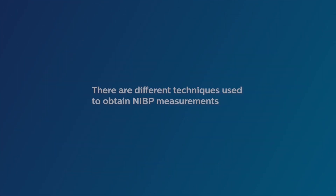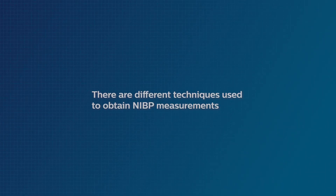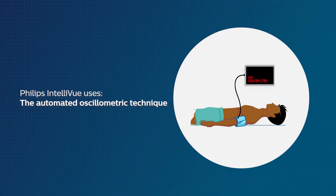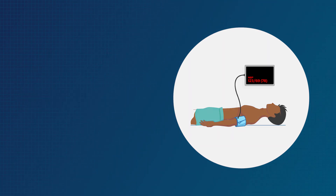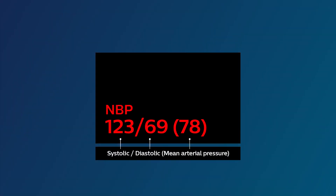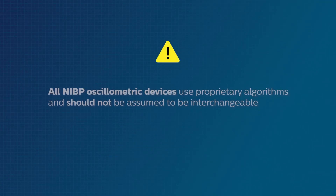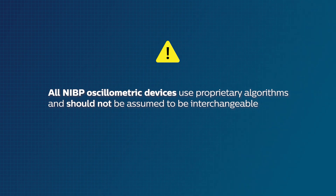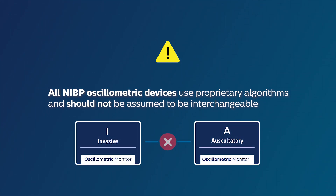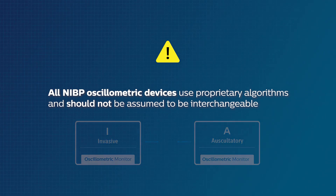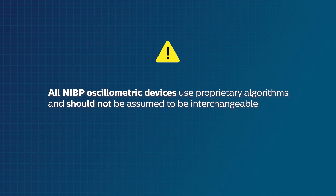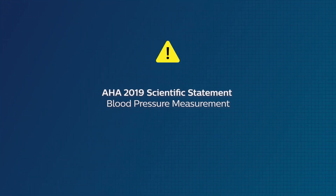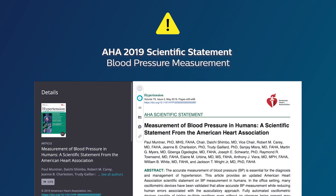Different techniques are used to obtain NIBP measurements. The Philips and Teleview patient monitors use the automated oscillometric technique to determine the systolic, diastolic, and mean arterial pressures. It's important to note that all NIBP oscillometric devices use proprietary algorithms and should not be assumed to be interchangeable. Only those that have been independently validated with an established protocol should be used, as described in the AHA 2019 Scientific Statement on Blood Pressure Measurement.